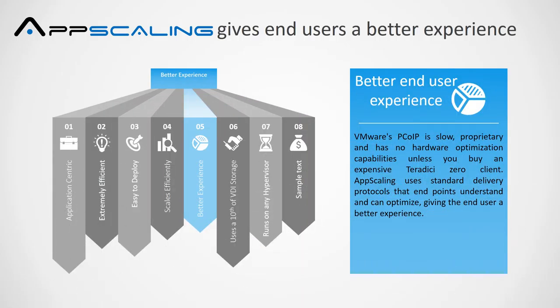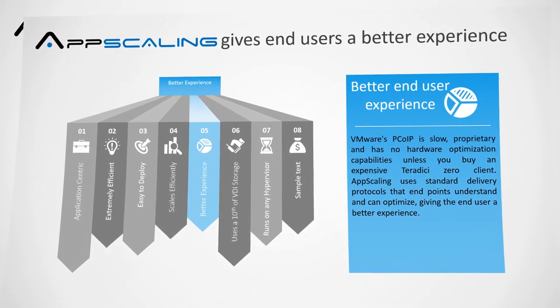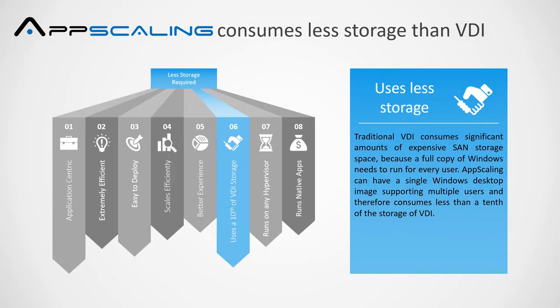App Scaling gives end users a better experience. VMware's PCOIP is slow, proprietary, and has no hardware optimization capabilities unless you buy an expensive Teradici Zero client. App Scaling uses standard delivery protocols that endpoints understand and can optimize, giving the end user a better experience. App Scaling consumes less storage than VDI. Traditional VDI consumes significant amounts of expensive SAN storage because a full copy of Windows needs to run for every user. App Scaling can have a single Windows desktop image supporting multiple users, consuming less than a tenth of the storage of VDI.